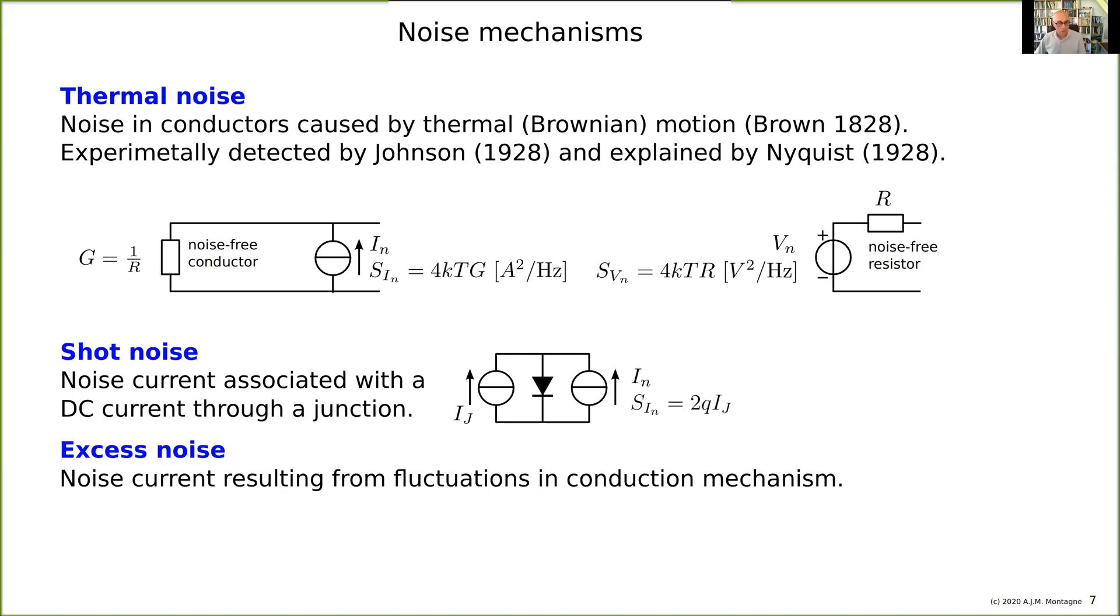Excess noise is another type of noise. It's noise due to fluctuations in a conduction mechanism. For example, you had it in very old carbon resistors. They're made of a kind of powder, and there are more ways for electrons to conduct the current. One jumps to one way, and the next time jumps to another way, so that gives a variation in the conductance.